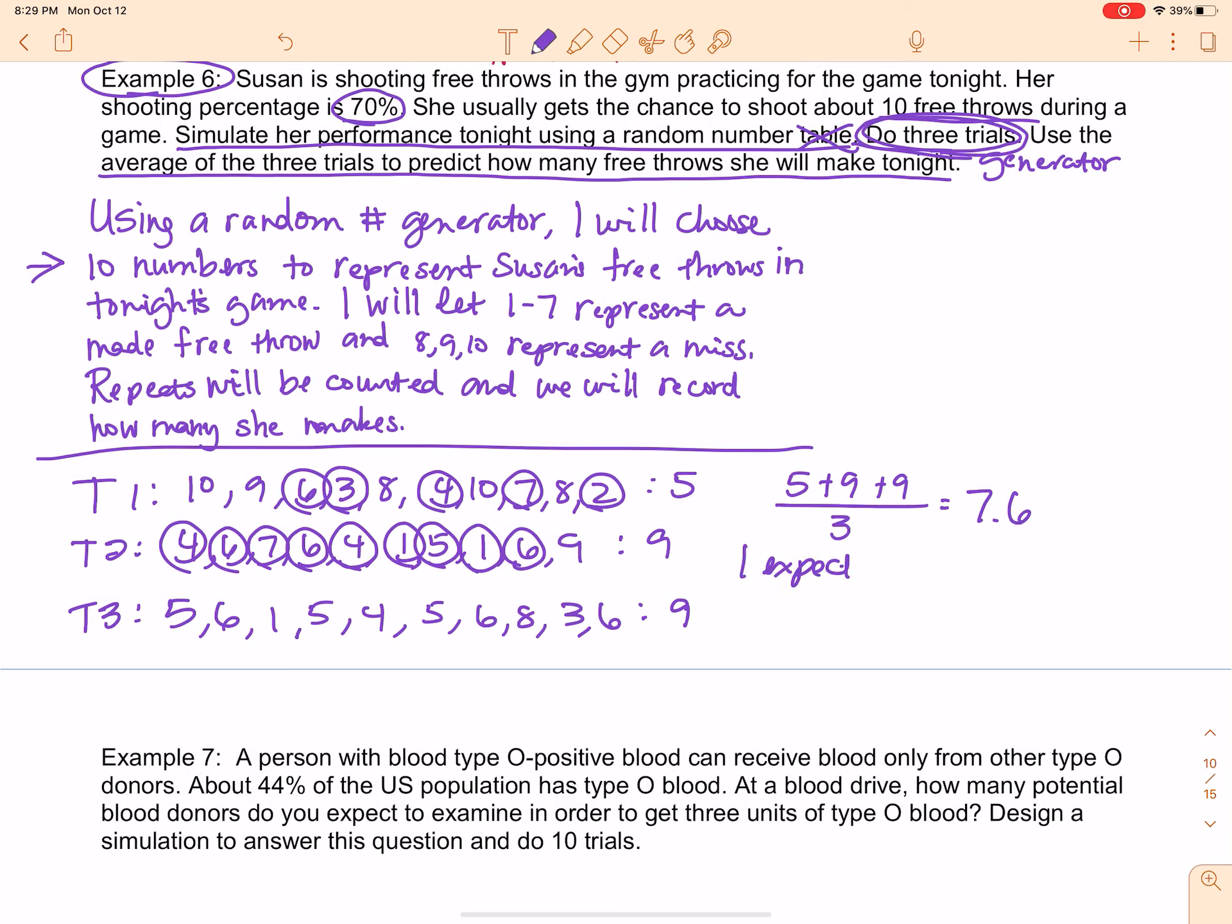So how would I answer this? I expect Susan to make between 7 and 8 free throws in tonight's game. So is that a big surprise? No, it's not because she usually shoots about 70%, but I still had to simulate it so that I could show you what a simulation looks like.